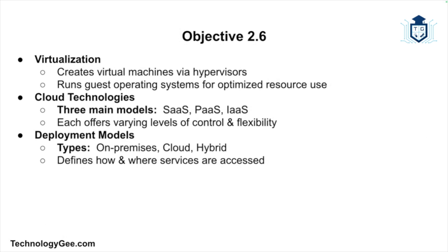To quickly recap: virtualization allows for the creation of virtual machines through hypervisors and runs guest operating systems for resource optimization. Cloud technologies come in three main models — software as a service, platform as a service, and infrastructure as a service — each providing different levels of control and flexibility. Deployment models like on-premises, cloud, and hybrid describe how and where these services are accessed. Understanding these differences is essential for navigating today's IT landscape and for your CompTIA Tech Plus exam.